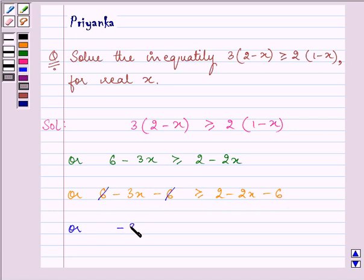After simplifying we have, minus 3x is greater than or equal to minus 2x minus 4.